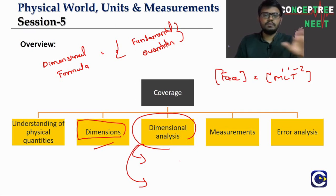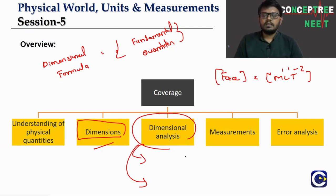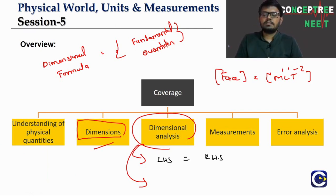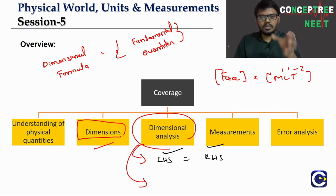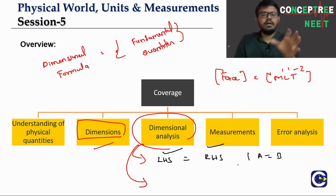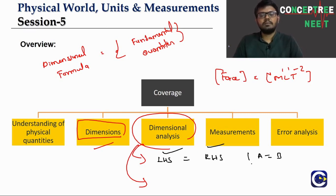We have already talked about these principles in Session 4. If you have an equation, whatever you have on the LHS will have a dimensional formula, and the RHS will also have a dimensional formula. When quantities A and B are being added — whether both are length, both are time, or both are mass — they will have the same dimensional formula.